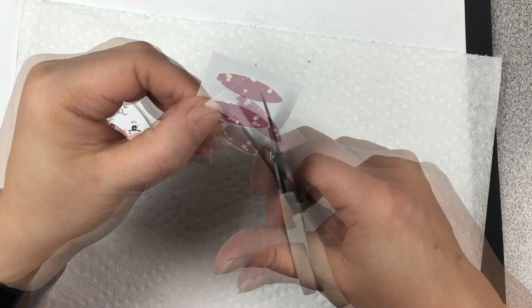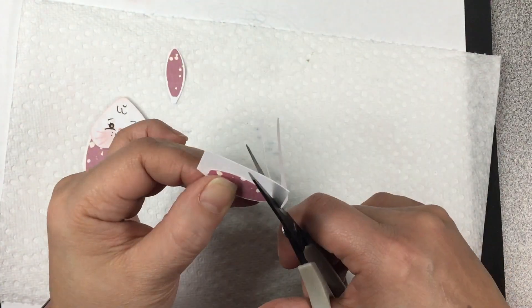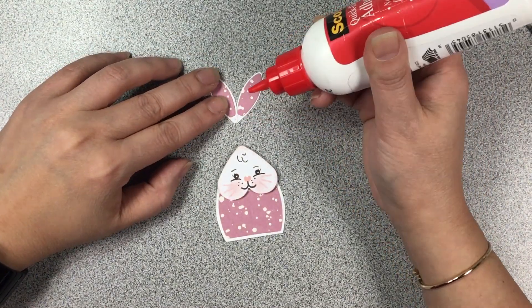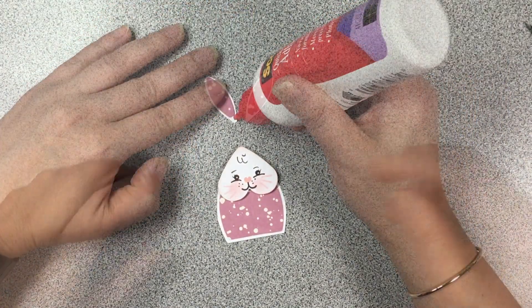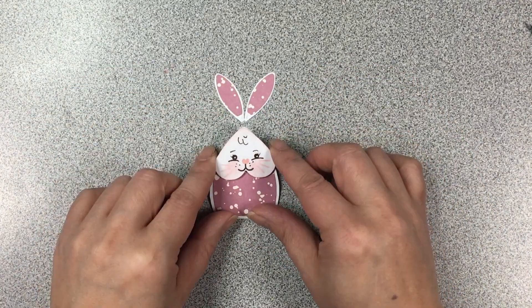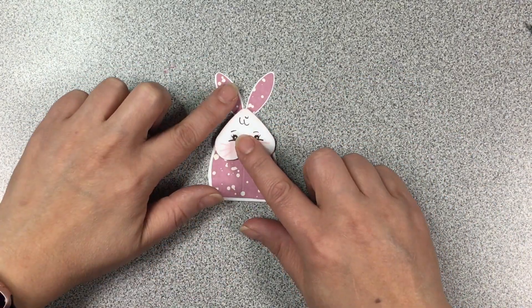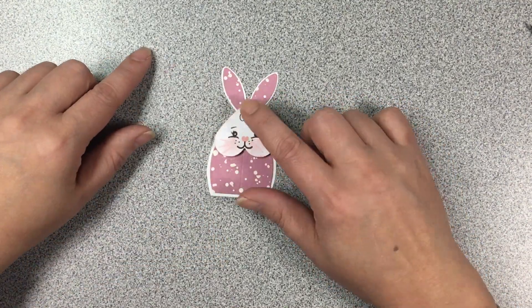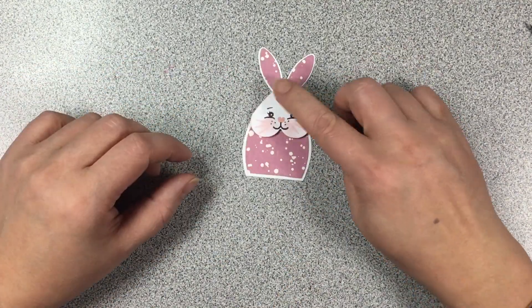And then for the ears we're just going to cut those out leaving a small white border and then just put them together at the bottom there and then glue them together and right onto the back of the bunny head. So that's pretty simple.